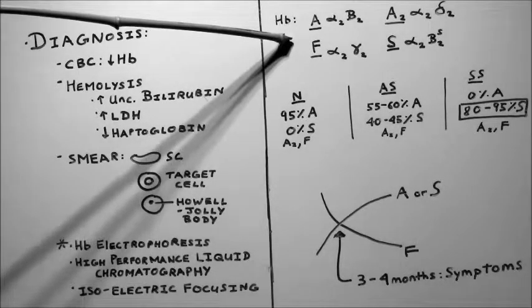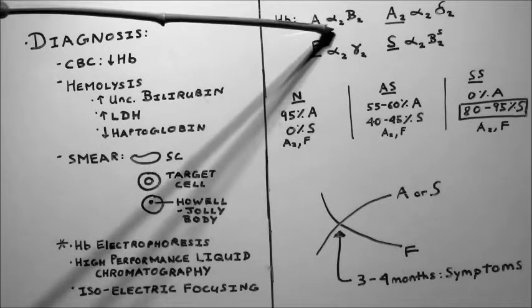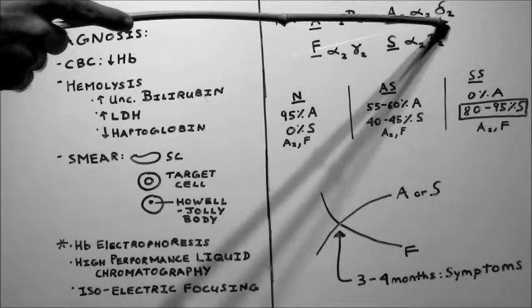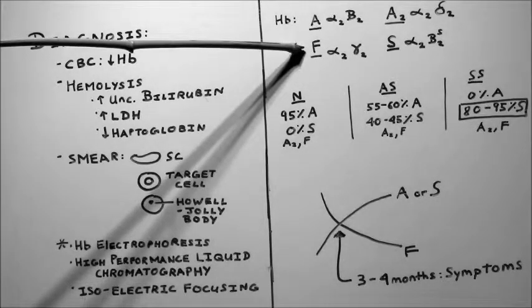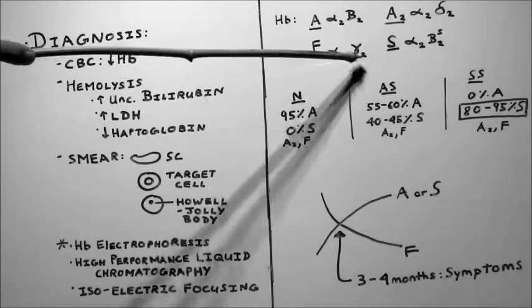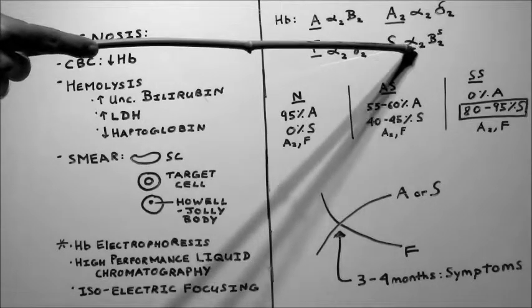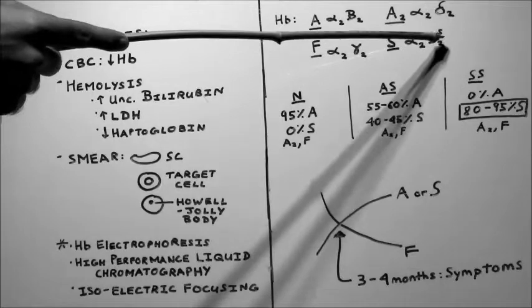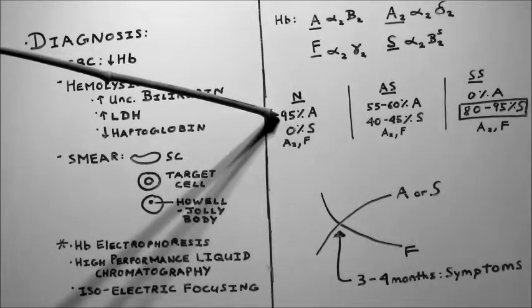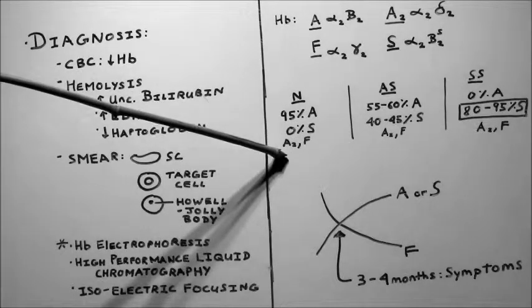So here are the main types of hemoglobin. There's hemoglobin A, which is the main hemoglobin found in adults. So it's alpha-2 and beta-2. There's hemoglobin A2, which has two alpha chains and two delta chains. Hemoglobin F is fetal hemoglobin. It's found mainly in the fetus and the newborn baby. So it has two alpha chains and two gamma chains. And there is hemoglobin S, which is the hemoglobin seen in patients with sickle cell. And it has two alpha chains and two beta chains. But remember that the beta chains are mutated, so I labeled it beta-S. Now in a normal adult, about 95% of your hemoglobin is hemoglobin A. They have 0% hemoglobin S. And they also have a little bit of A2 and F.